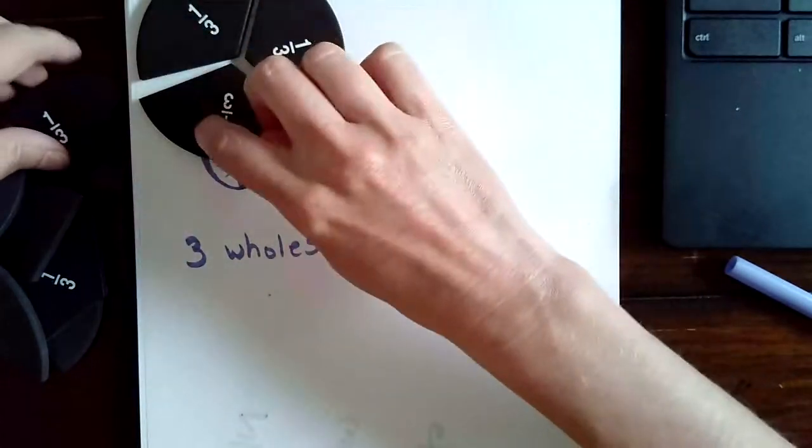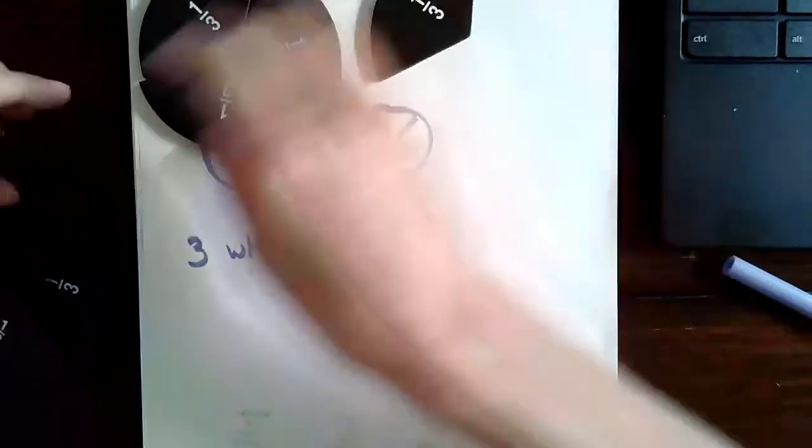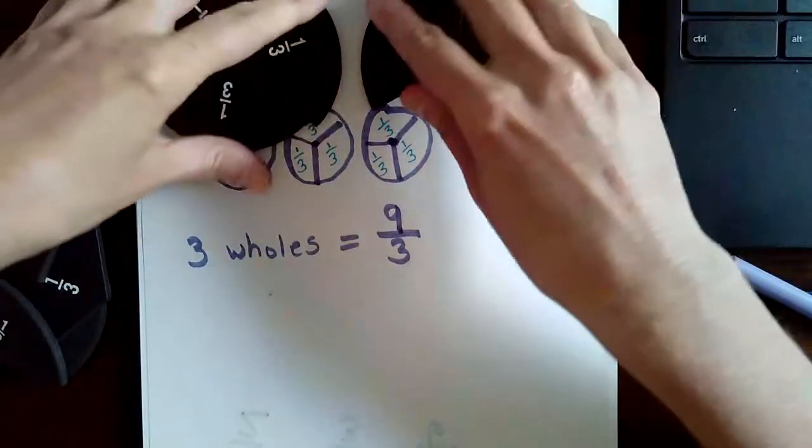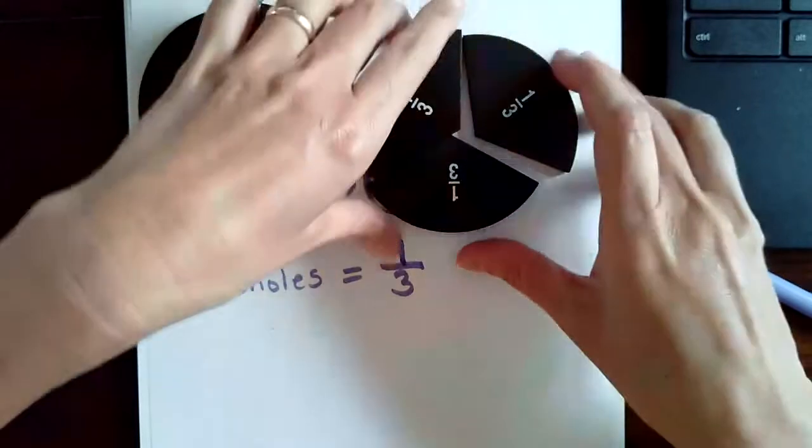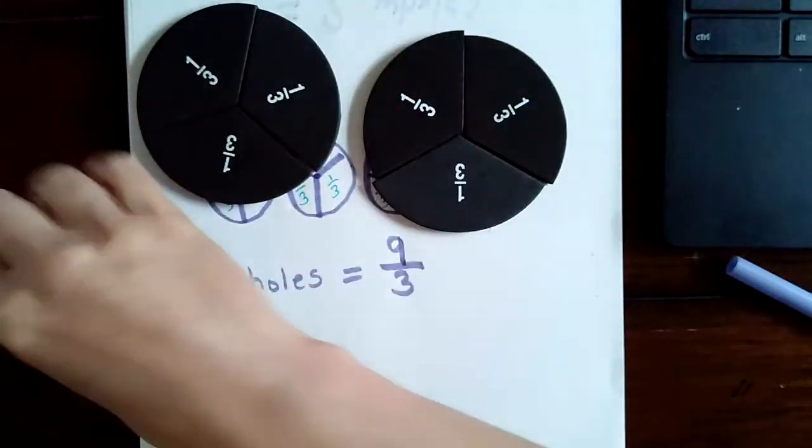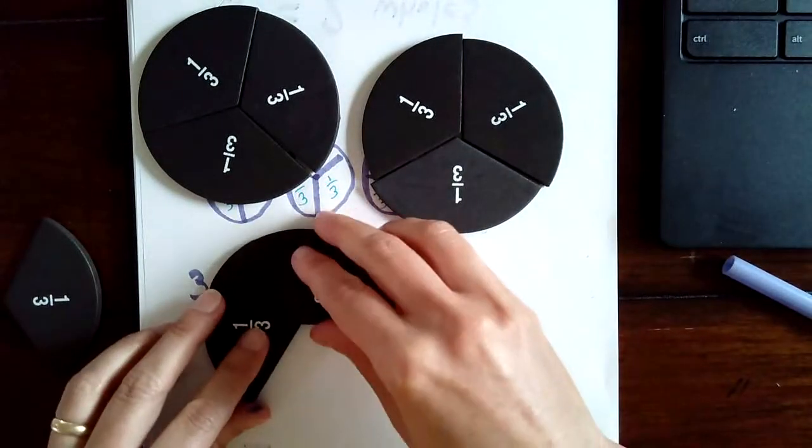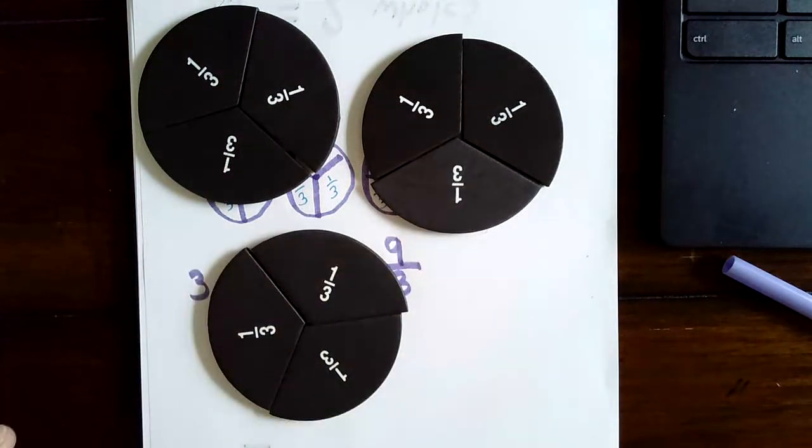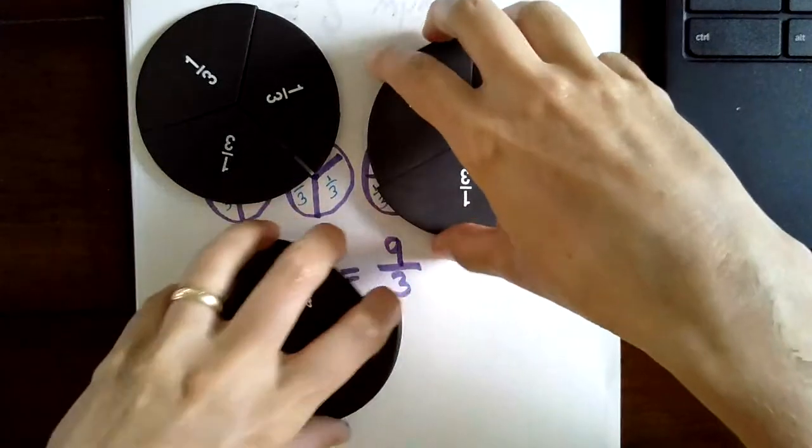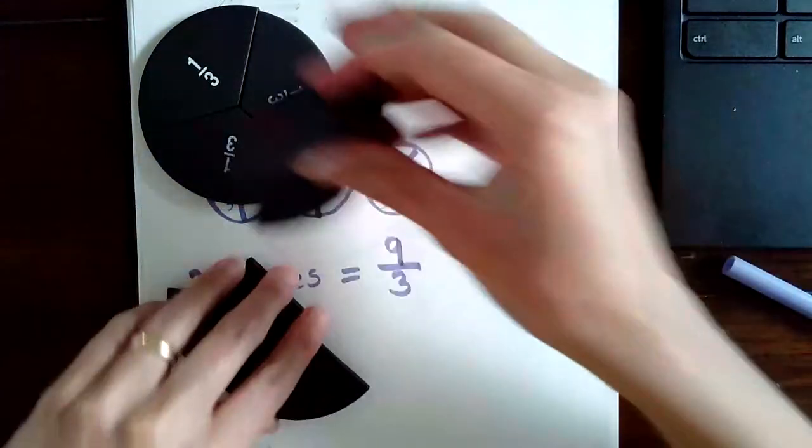There's one third, two thirds, three thirds, four thirds, five thirds, six thirds, and seven thirds, eight thirds, nine thirds. And you can clearly see that nine thirds is equal to three wholes.